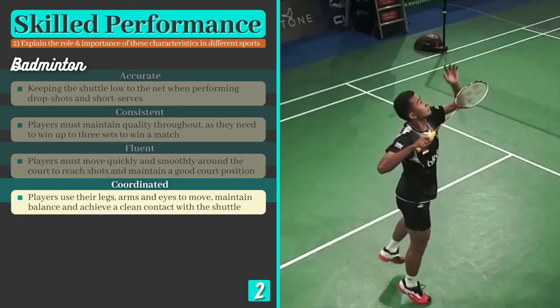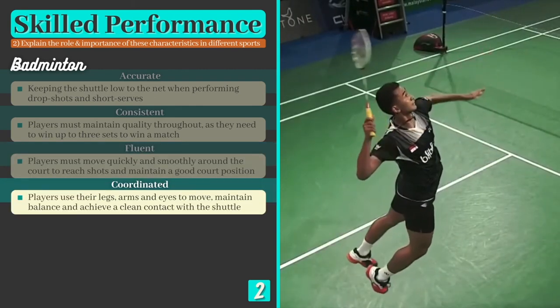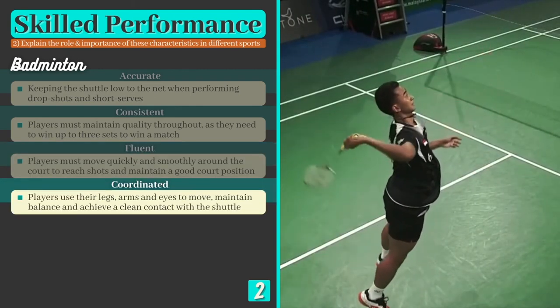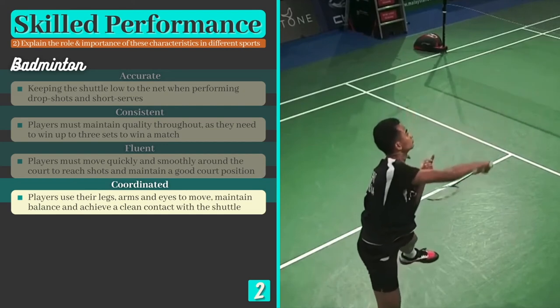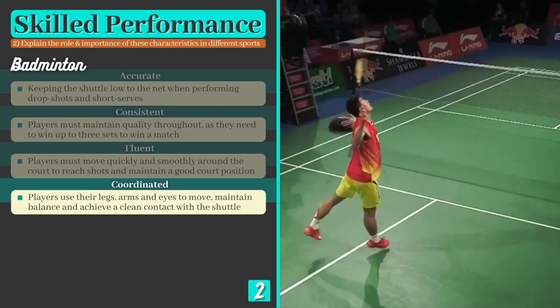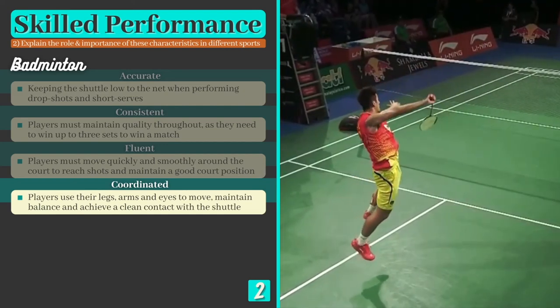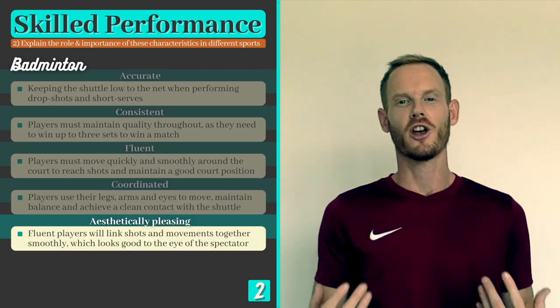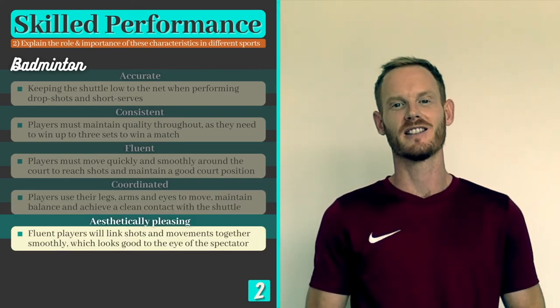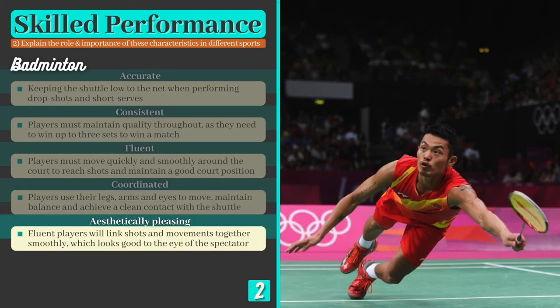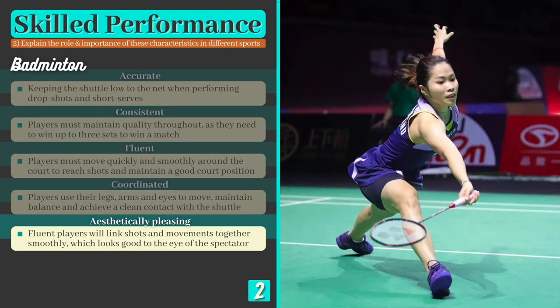Coordination is also essential for badminton players, who need to use their legs to adopt a stable, balanced position, and their arms and eyes to make sure the shuttle makes contact with the centre of the racket. Now although badminton players are not judged on style, a fluent player is likely to produce aesthetically pleasing performances, so how a performance looks is still a good indicator of skill level.